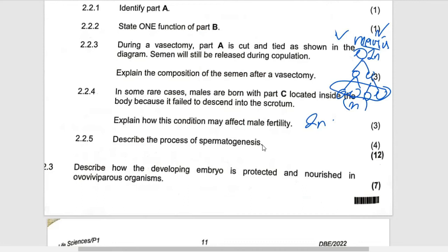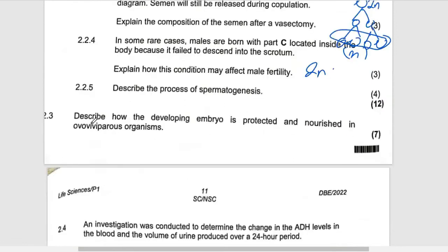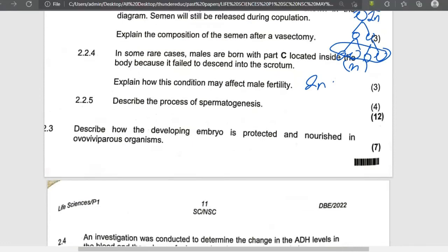Go to our book, download it, and use it. You'll see what you need to get a distinction. They are saying: describe how the development of the embryo is protected and nourished in ovoviviparous organisms.